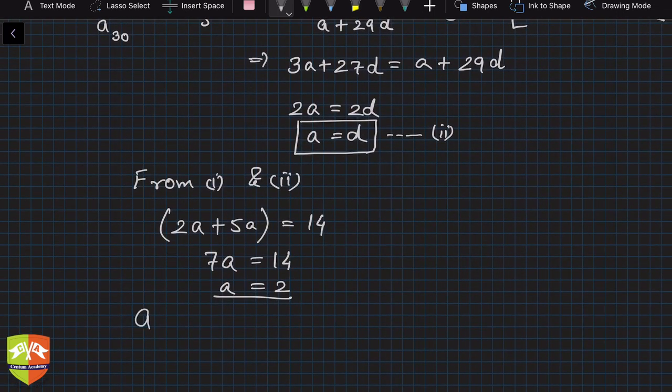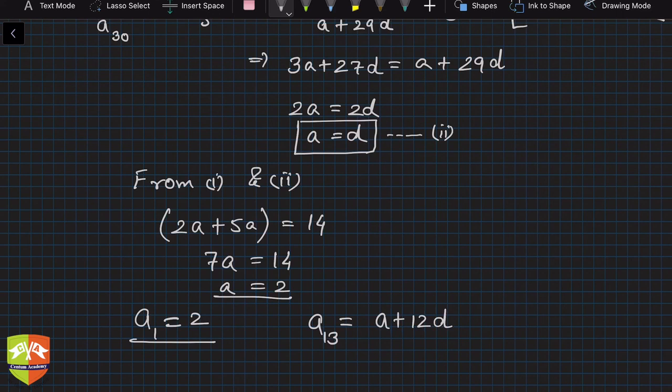And what will be a₁₃? a₁₃ will be a plus 12d. Now a is equal to 2 and d is equal to 2, because a and d were same. Hence a₁₃ will be equal to 2 plus 12 into 2, correct. So this is nothing but 26. So we got a₁₃ as well.